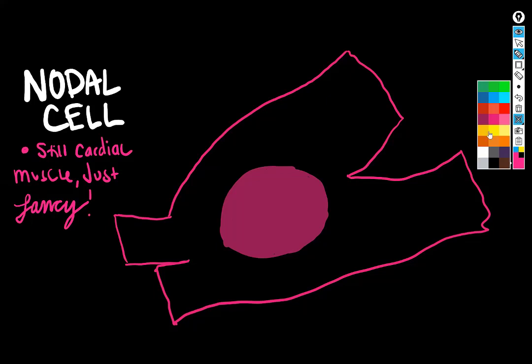So if it's still cardiac muscle, that means it has to have the same features. So we've got our nucleus here. And remember, cardiac muscle cells are uninucleate, so unlike skeletal muscle, they only have one nucleus, not a bunch.